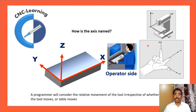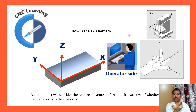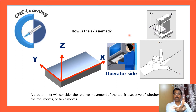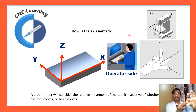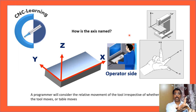This picture shows the right-hand thumb rule. If you hold your right hand with three fingers — thumb, forefinger, and middle finger — pointing perpendicular, and point the middle finger towards the spindle, then your thumb will point to X-plus and your forefinger will point to Y-plus. Whether it is a VMC or HMC, applying this rule lets you find the XYZ axes.